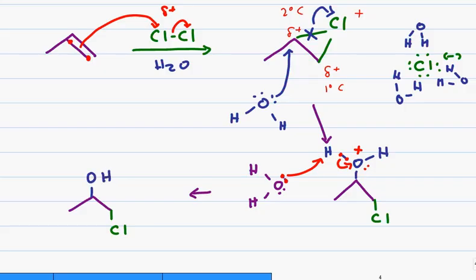The reason the alcohol is on the secondary carbon is because the intermediate had a greater partial positive on the secondary carbon, and therefore attracted the water — acting as your nucleophile — to attack at that position.